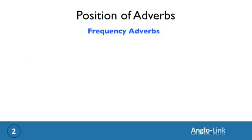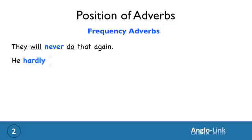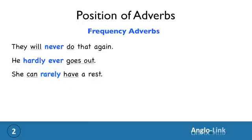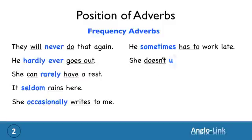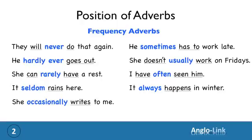Let's look at other sentences with adverbs of frequency. 'They will never do that again.' 'He hardly ever goes out.' 'She can rarely have a rest.' 'It seldom rains here.' 'She occasionally writes to me.' 'He sometimes has to work late.' 'She doesn't usually work on Fridays.' 'I have often seen him.' 'It always happens in winter.'